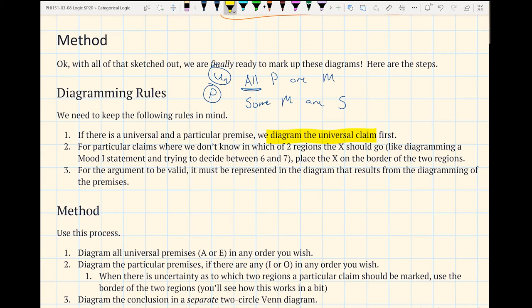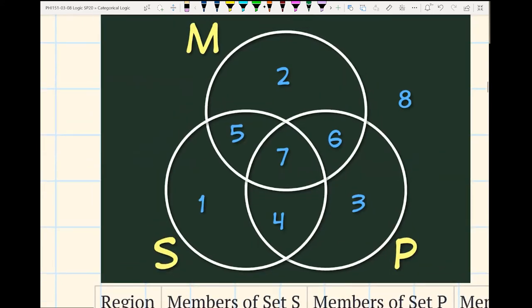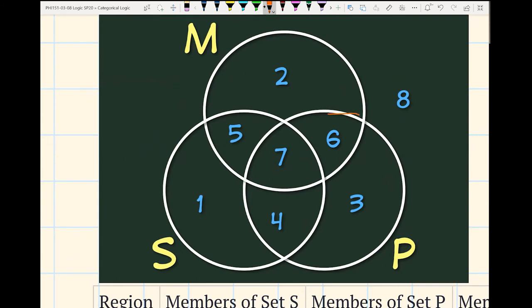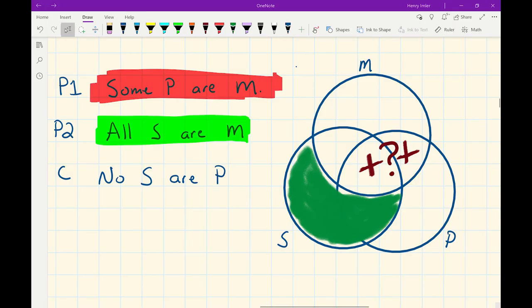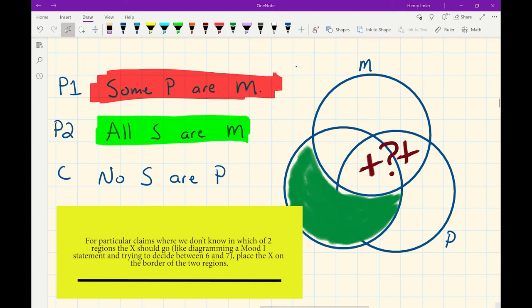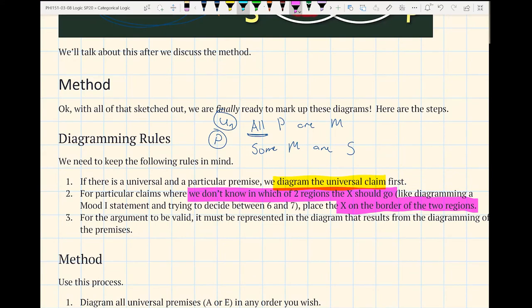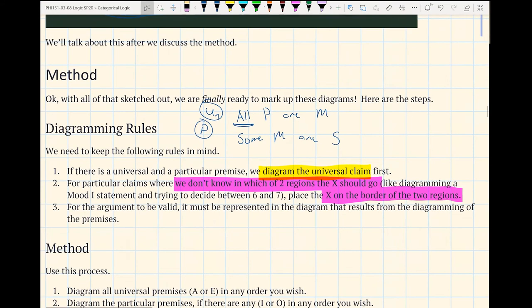Exactly because of number two. There'll be times, and we'll see an example of this, there'll be a time whenever we know that something must go in one of these two regions, but we don't know where. What we do in those cases is we draw an X on the boundary of the two regions. When we don't know which of two regions where something should go, we place the X on the border of the two regions. So that's the key thing in two. And then finally, we just have our criteria. If something is valid, it is the conclusion represented in the diagramming of the premises.